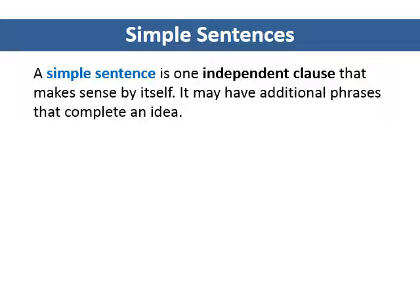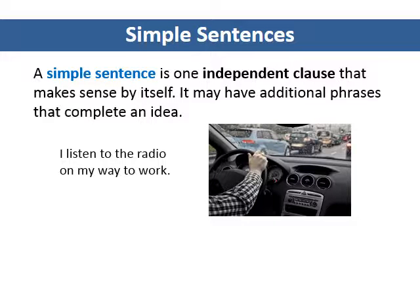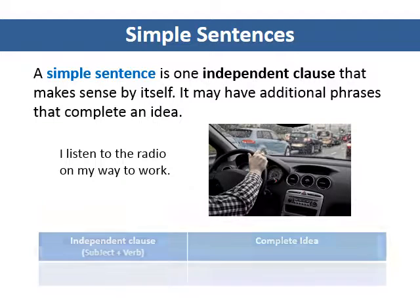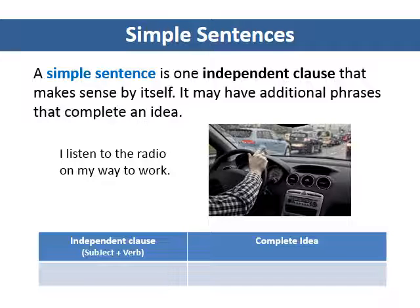Simple sentences. A simple sentence is one independent clause that makes sense by itself. It may have additional phrases that complete an idea. For example: 'I listen to the radio on my way to work.' In this sentence, we have one subject, 'I,' and one verb, 'listen.' Together, they make up an independent clause.